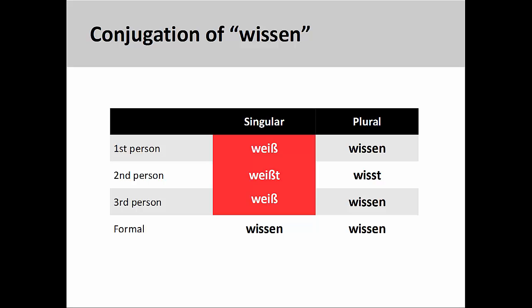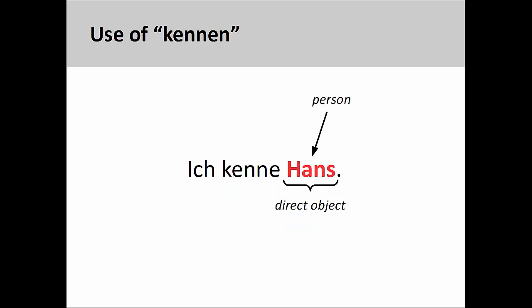Let's take a closer look now at how to use these two verbs. In the sentence 'Ich kenne Hans' — I know Hans — the direct object of the verb is Hans. Since the direct object is a person, the verb Kennen must be used.